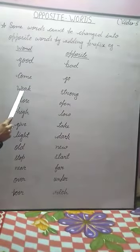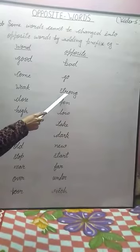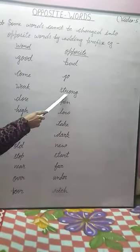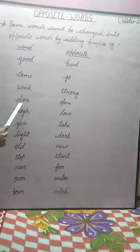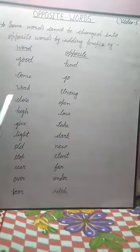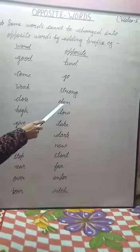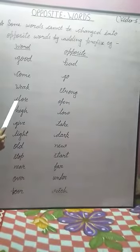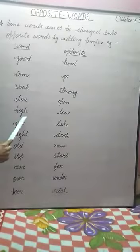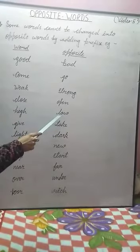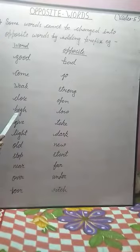Weak. The opposite of weak is strong, and the opposite of strong is weak. Next one is close. The opposite of close is open, and the opposite of open is close. High. The opposite of high is low, and the opposite of low is high.